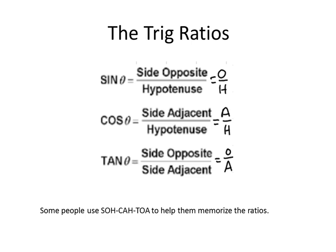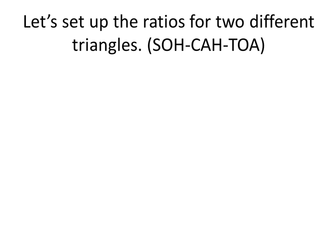Some people use SOH-CAH-TOA to help memorize the ratios. SOH stands for sine equals opposite over hypotenuse, CAH stands for cosine equals adjacent over hypotenuse, and TOA stands for tangent equals opposite over adjacent. You'll hear me say SOH-CAH-TOA a lot to help you memorize these, because you do need to know them.